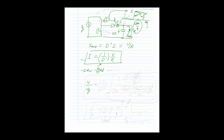The result is: V/V_G = (1/D') × η, where the efficiency term is: η = 1 / [1 + (R_W + D·R_DS(on) + D'·R_D) / (D'²·R)]. The winding resistance R_W appears without a D or D' weighting because the inductor current flows through it during both DT and D'T — and D + D' = 1.